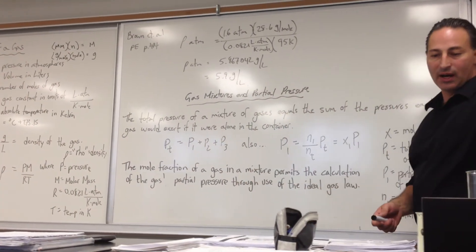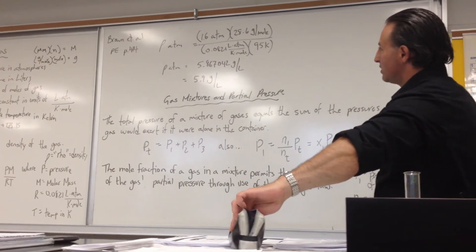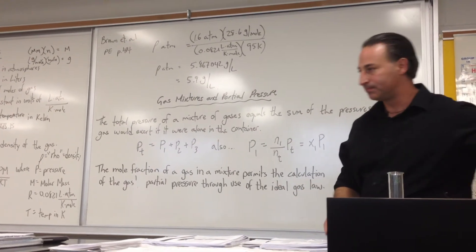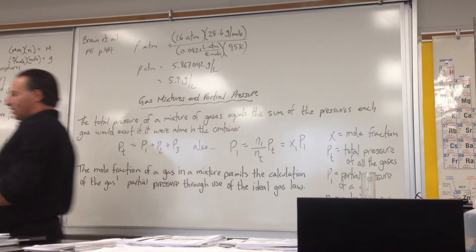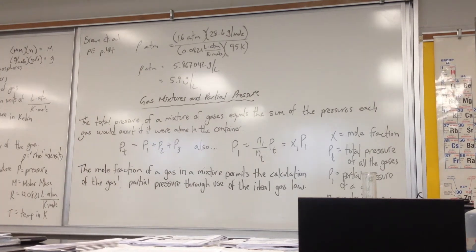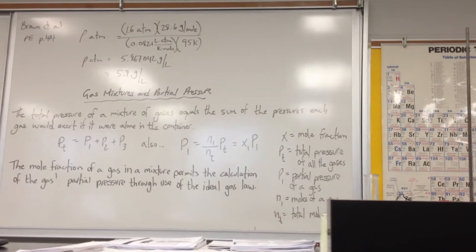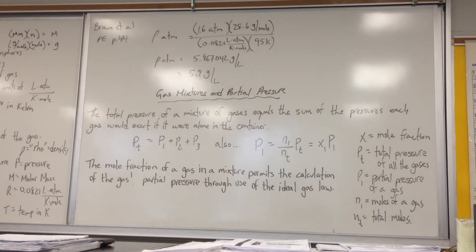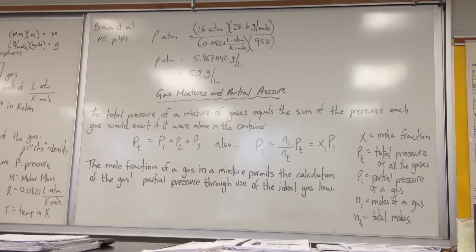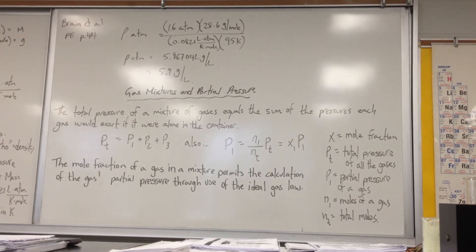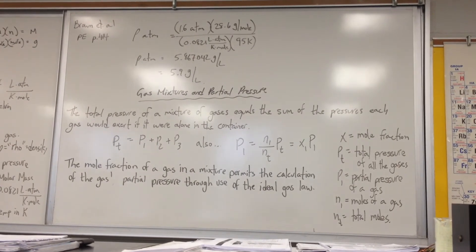In that question, we are asked, what is the density of the atmosphere? The question asks, what is the mean molar mass of the atmosphere on the surface of Titan, Saturn's largest moon, is 28.6 grams per mole. The surface temperature is 95 Kelvin and the pressure is 1.6 atmospheres.